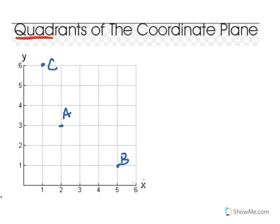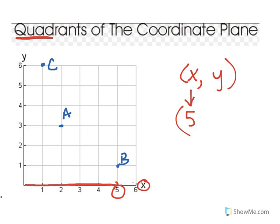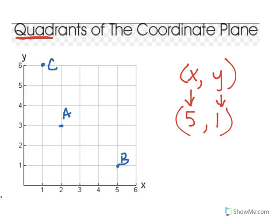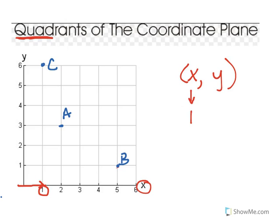Let's locate point B. X comes before y, just like the alphabet. I've got to get to point B by moving side to the right — one, two, three, four, five units to the right. So that's positive five. Then I'm going to go to my y-axis — y goes up and down — and I'm going to go up one unit, so that's also positive one. Now let's try point C. To get to point C, I have to first go to the x-axis — the horizontal axis, side to side — one unit. My x is one. For my y, I have to go up one, two, three, four, five, six units. So my y is six.